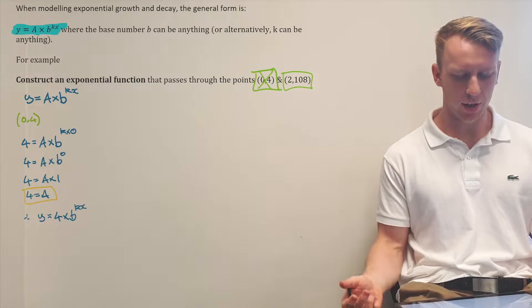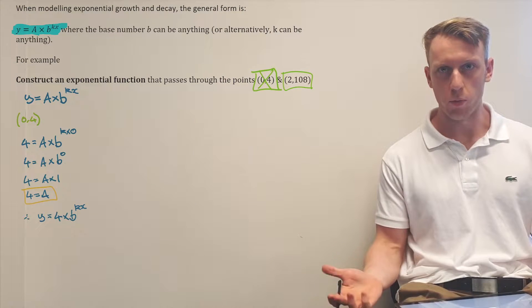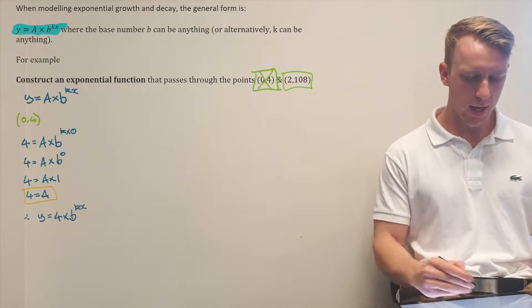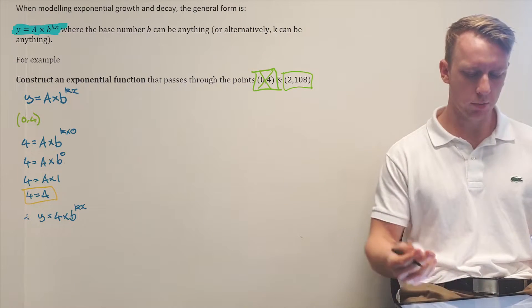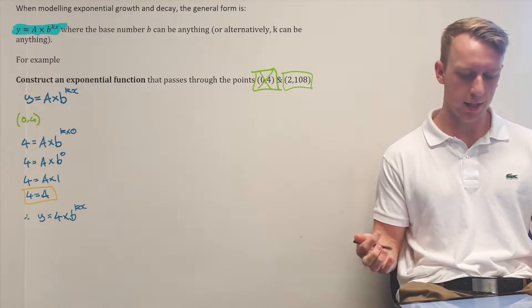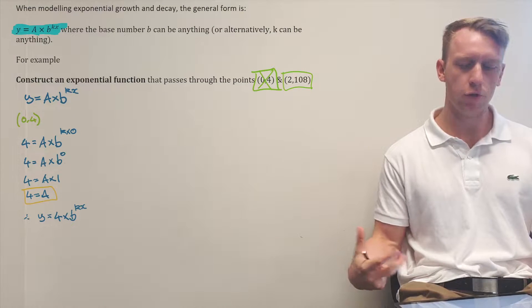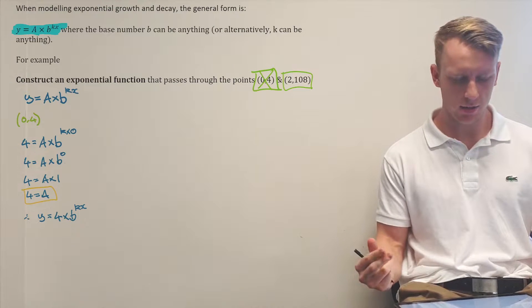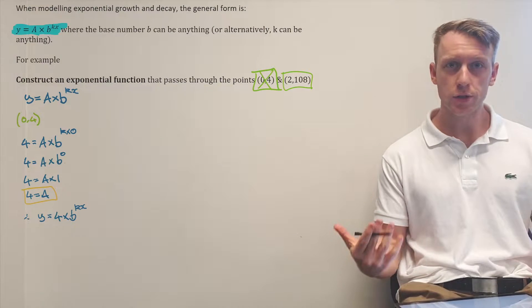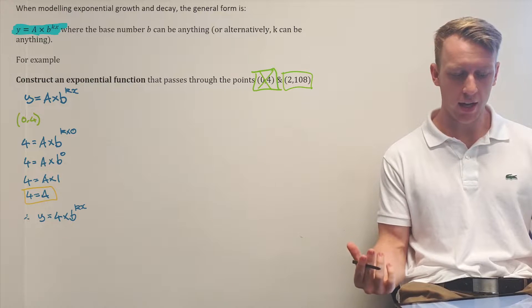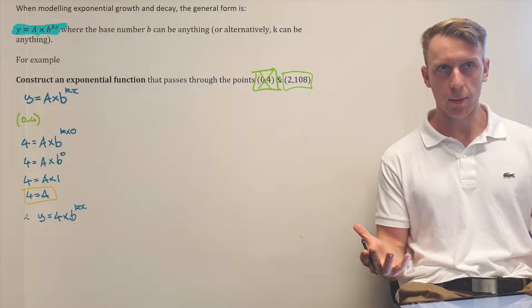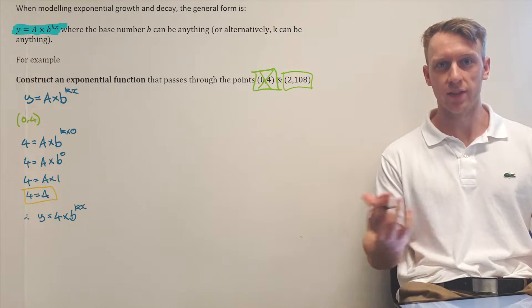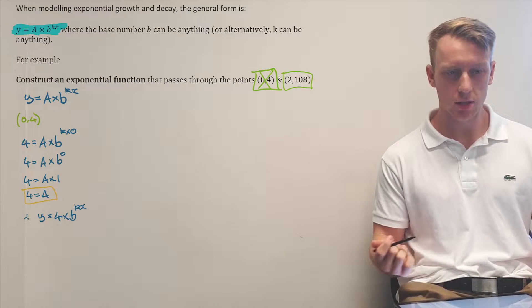We know we can't solve that — we need more than one point. The key idea here is that you can pick a value for b to be anything, and the constant value for k will make up whatever that value needs to be.